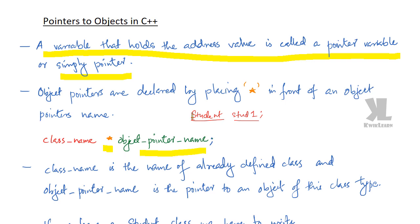Then we will have our pointer name, the object pointer name. We can write this as 'student star st1', something like that. Or we can simply write 'student star' and the object name — class name star, object name — something like this.